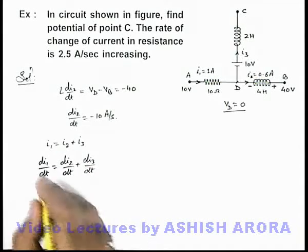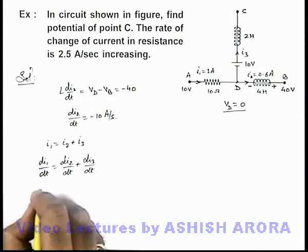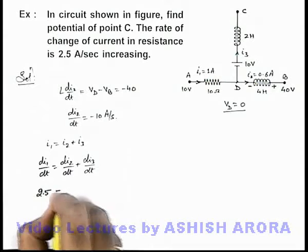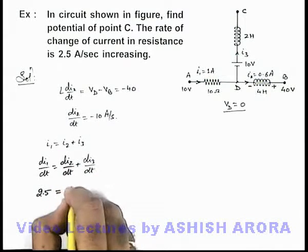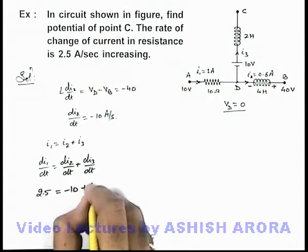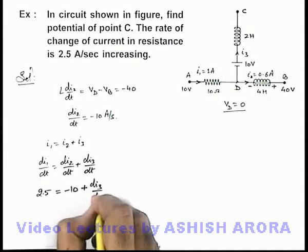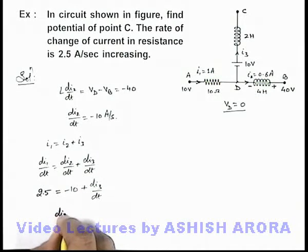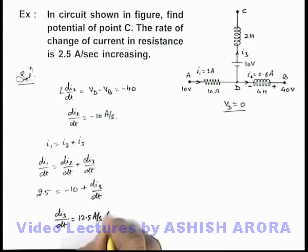And in this situation di1/dt we are already given at 2.5 ampere per second, di2/dt we have calculated at minus 10, plus di3/dt. On simplifying we'll be getting di3/dt is equal to 12.5 ampere per second. It is positive, that means it is on increasing side.